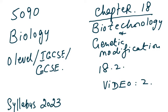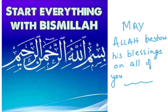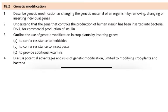Bismillah ar-Rahman ar-Rahim. We start the second video on chapter 18, which is biotechnology and genetic modification, and this is 5090 biology. In 18.2 we are going to talk only about genetic modification; the previous was about biotechnology.